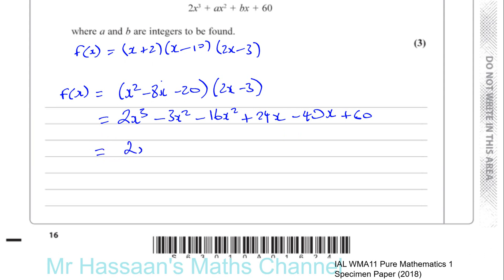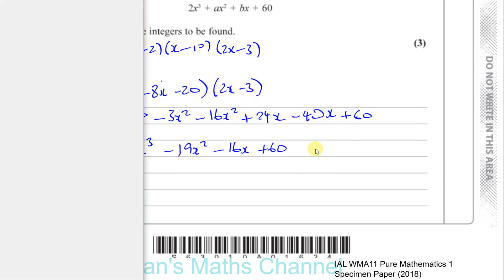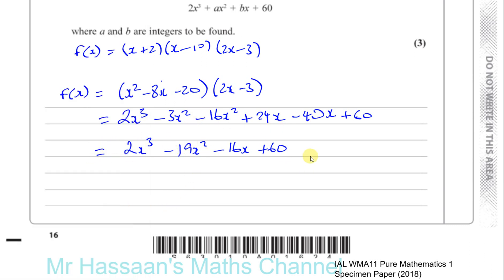Collecting terms: we get 2x cubed; minus 3x squared minus 16x squared gives minus 19x squared; and 24 minus 40 gives minus 16x; plus 60. So we have f of x in the required form, and we can see that a is minus 19 and b is minus 16. That's part b done.